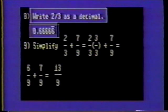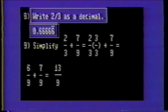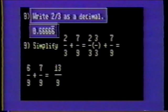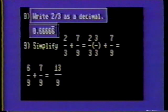Number eight: write two-thirds as a decimal. Simply divide two by three to obtain 0.66666. Notice the bar over the last six — this indicates that six is repeated infinitely.